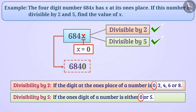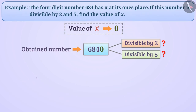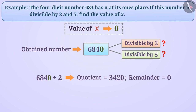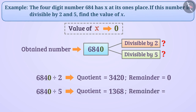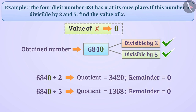Let's verify this. If we divide 6840 by 2, the quotient is 3420 and the remainder is 0. Similarly, if we divide 6840 by 5, the quotient is 1368 and the remainder is 0. Since the remainder is 0 in both cases, we can say that 6840 is divisible by both 2 and 5. That is, our answer is correct.